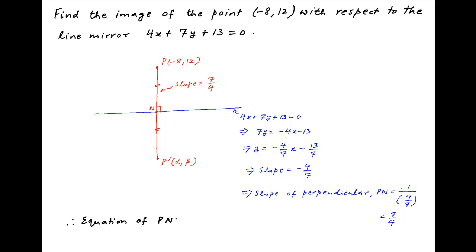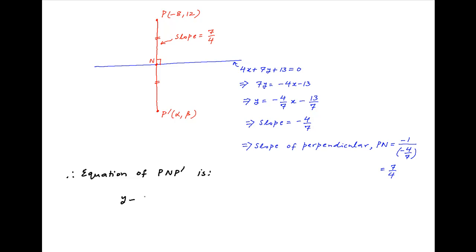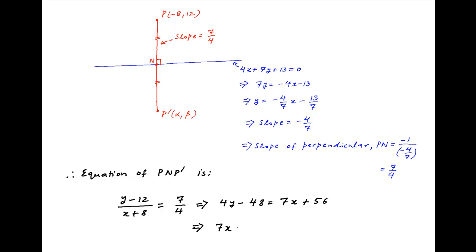Therefore, the equation of the line PP', where N is the foot of the perpendicular, can be written as (y - 12) / (x + 8) = 7/4. Cross multiplying, we get 4y - 48 = 7x + 56. Therefore, 7x - 4y + 104 = 0.